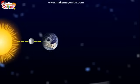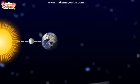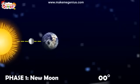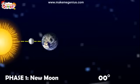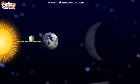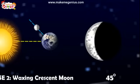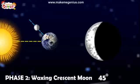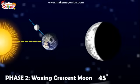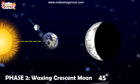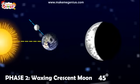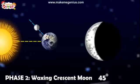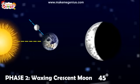Now look carefully. Phase 1 is called the new moon. In this phase, we cannot see any part of the illuminated half of the moon. Phase 2 is called the waxing crescent. Waxing means that the moon is going from a smaller size to a larger size, and crescent means that it is between new moon and half moon. It looks like a sickle, like when you take a bite out of a cookie.